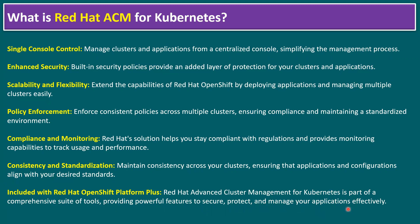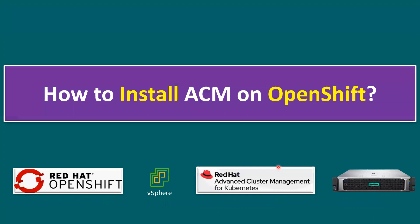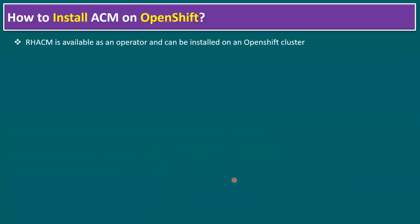Now we'll talk about how to install ACM — Advanced Cluster Management — on OpenShift. In our lab environment, our OpenShift cluster is running on a vSphere environment and we are going to configure Advanced Cluster Management for Kubernetes. One key point: Red Hat ACM is available as an operator and can be installed on an OpenShift cluster. Operators can generally be found in the OpenShift OperatorHub, so let's log into our lab system.